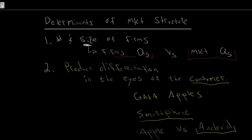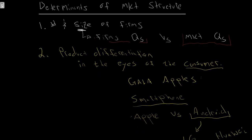Even within the Android market, we have all these different providers: LG, Huawei, Samsung, and so on. We have lots of different companies all providing Android phones — essentially the same operating system. But yet there is still differentiation that occurs between the different firms. Some people have a preference for Samsung, others for Huawei, others for LG. In the eyes of the consumer, an LG phone is different than a Samsung phone.